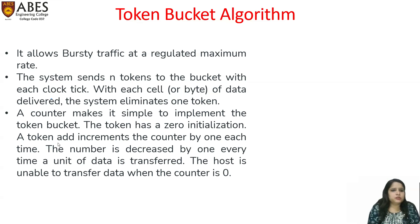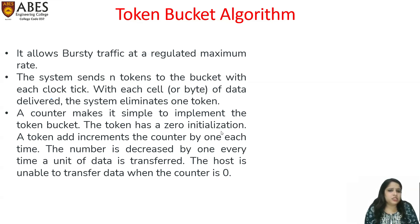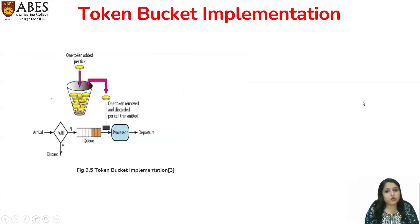The system sends N number of tokens to the bucket with each clock tick. With each cell of data delivered, the system eliminates one token. A counter makes it simple to implement the token bucket — it has zero initialization. Adding a token increments the counter by one; transferring a unit of data decrements it by one. The host is unable to transfer data when the counter reaches zero, meaning no data transfer is possible when the token bucket is empty.